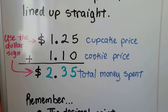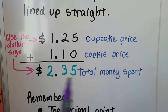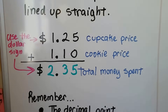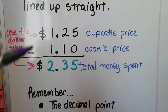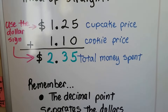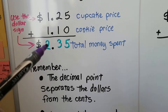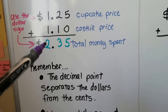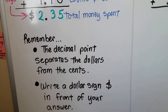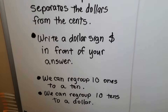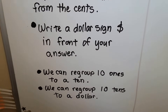If we bought a cupcake and a cookie, and this was the price of the cupcake and this was the price of the cookie, we could total them. We could add them and find the sum to find out how much money we spent. You have to remember to use a dollar sign when you're adding money. The decimal point separates the dollars from the cents — this is the dollar side and that's the cent side. We have to write that dollar sign in front of our answer and remember we can regroup ten ones to a ten and ten tens to a dollar.